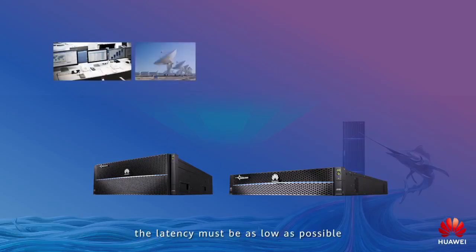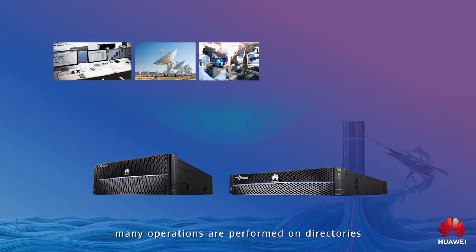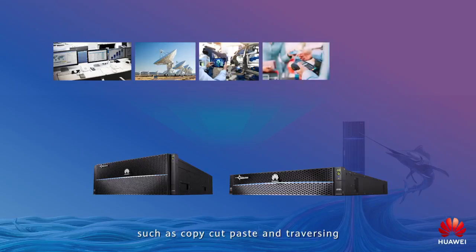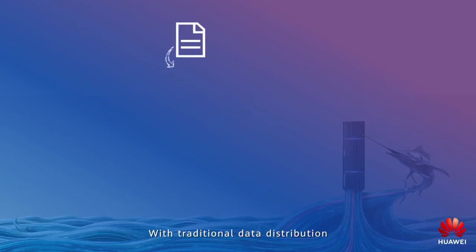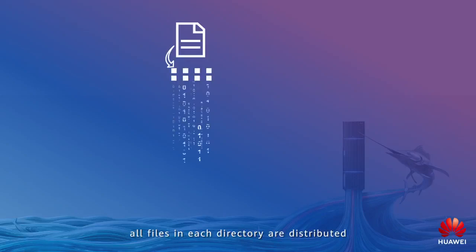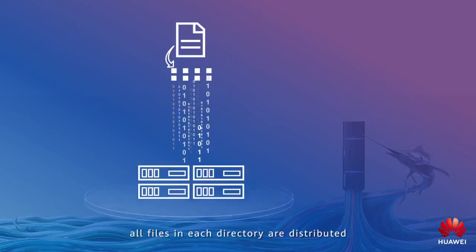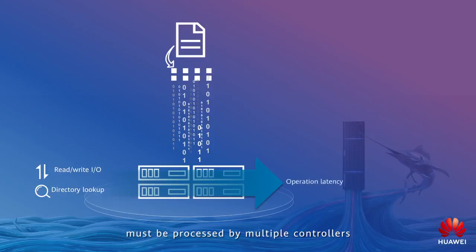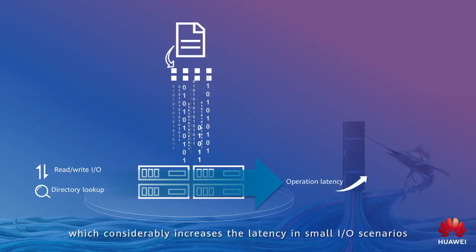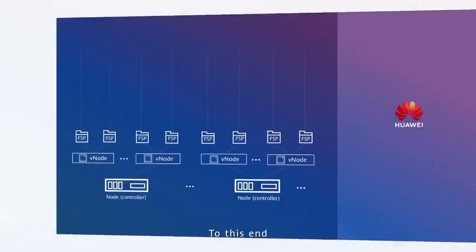Such scenarios are file read and write intensive, therefore the latency must be as low as possible. Many operations are performed on directories such as copy, cut, paste, and traversing. With traditional data distribution, all files in each directory are distributed. As a result, read and write IOs and lookup operations to individual files must be processed by multiple controllers, which considerably increases the latency in small IO scenarios.